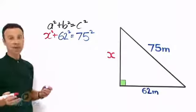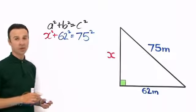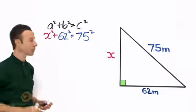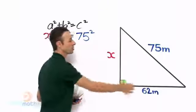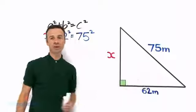So the theorem and the equation looks like this: x squared plus 62 squared, there the two links connected to the right angle, x squared plus 62 squared equals the hypotenuse all the way across there, that very long length 75 squared.